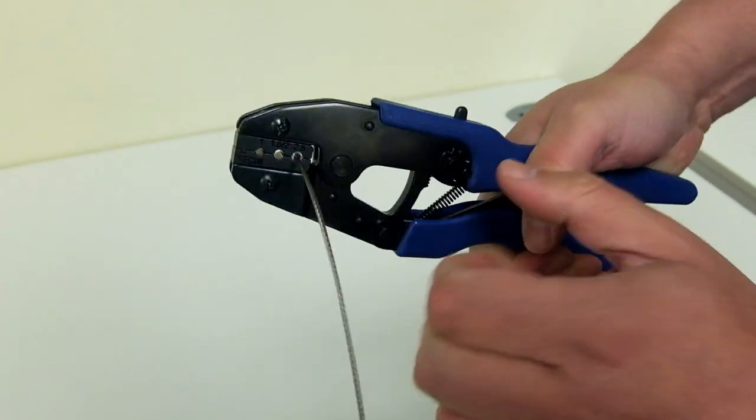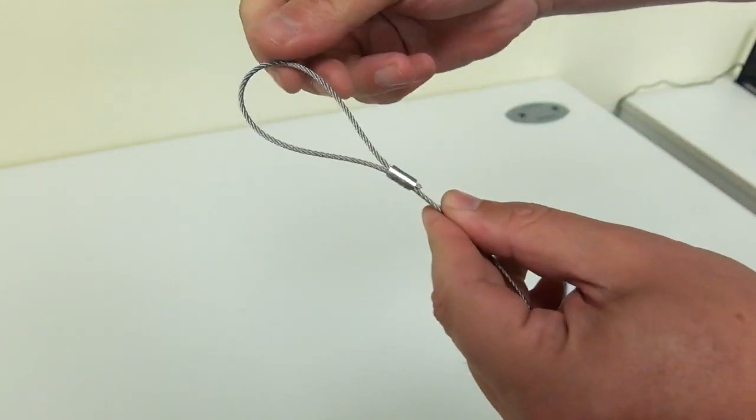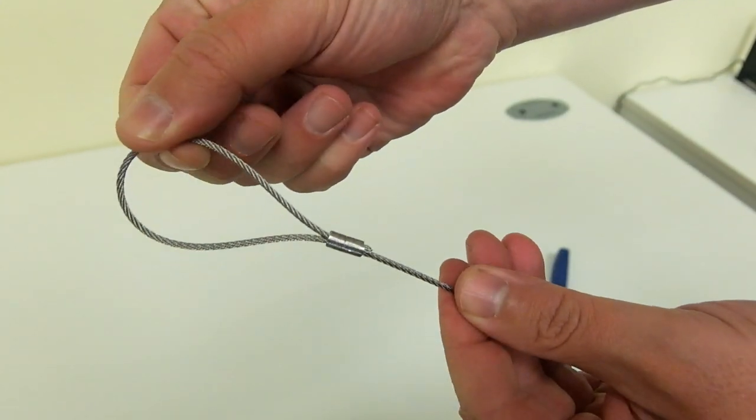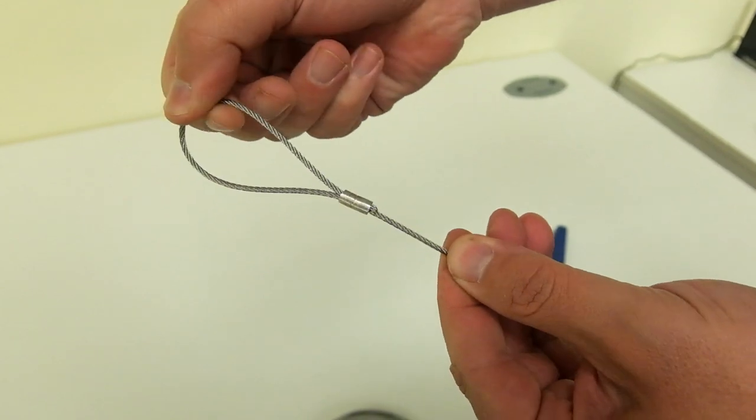Ensure that the tool clicks out completely which ensures full die closure. The finished assembly should achieve 90% of the cable minimum breaking load.